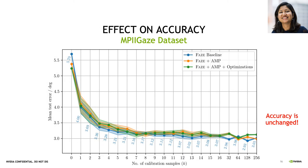The last thing I wanted to show was how these optimizations affected accuracy — essentially, it was unchanged. The gaze error is shown along the y-axis as a function of the number of calibration samples along the x-axis from 0 to 256, used for each subject during test-time fine-tuning. In blue is the curve without any training optimizations — note that lower is better since it is error. In orange is the case with mixed precision added, and in green is the case with all other optimizations including distributed data parallel, FusedSGD, and convolutional algorithm auto-tuning. All curves are basically within standard error, so accuracy was unaffected.